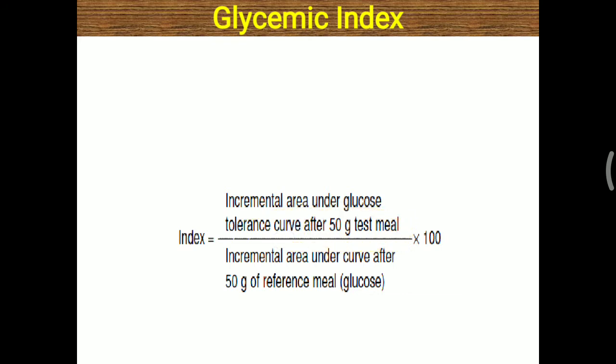Suppose any foodstuff is taken in a quantity of 50 grams and given. Gradually, the plasma glucose level is measured at 1 hour, 2 hours, and 3 hours. This is compared with the incremental area under the curve after 50 grams of a reference meal, which is glucose powder. The test meal result is divided by the reference meal result and multiplied by 100 — that index is called the glycemic index.